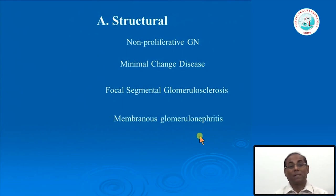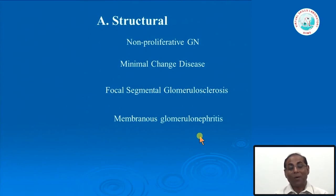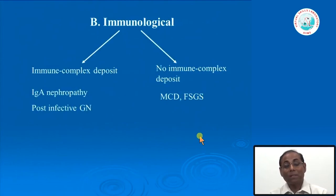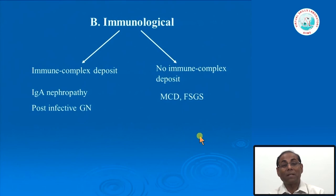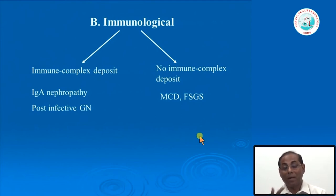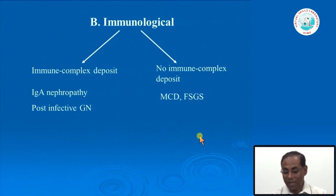Then comes membranous glomerulonephritis—no proliferation, only thickening of the glomerular membrane. So the three most important entities in non-proliferative glomerular disease are: minimal change disease (MCD), focal segmental glomerulosclerosis (FSGS), and membranous glomerulonephritis (MGN). Regarding immune complex deposits: in IGA nephropathy there are IgA deposits; in post-infective GN there are certain immune complex deposits. Notably, MCD and FSGS have no immune complex deposits. The study of immune complex deposits is therefore very important for further classification.